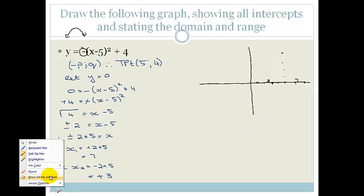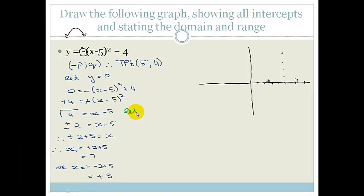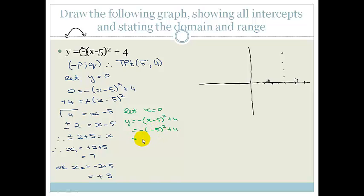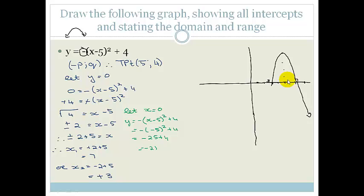Now to find the y-intercept, let x = 0: y = −(0 − 5)² + 4 = −(−5)² + 4 = −25 + 4 = −21. So the graph cuts the y-axis at −21. I need to extend the axes to show this point.